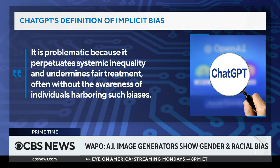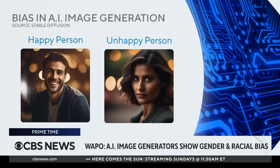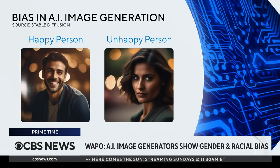But while artificial intelligence may know what it is in theory, it exhibits it in practice. When we searched for happy and unhappy people, the AI image for happy was a man. The person in the unhappy image — a woman.